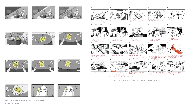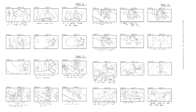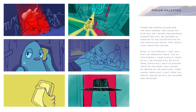Those are previous versions of my storyboards — the black and white version of the first scene. I also want to discuss my color palette. Those are the simple colors for the main scenes. The color palette will be limited. For example, characters will be colored according to the color palette of the particular scene — they won't have their own individual colors.